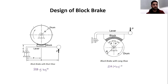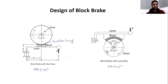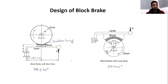The working of this block brake is such that the drum rotates either in the clockwise or anticlockwise direction. This is the lever, and the block is rigidly attached with the lever. It consists of a friction lining attached with the block. Our objective is to stop or reduce the speed of the drum by applying a force on the lever.